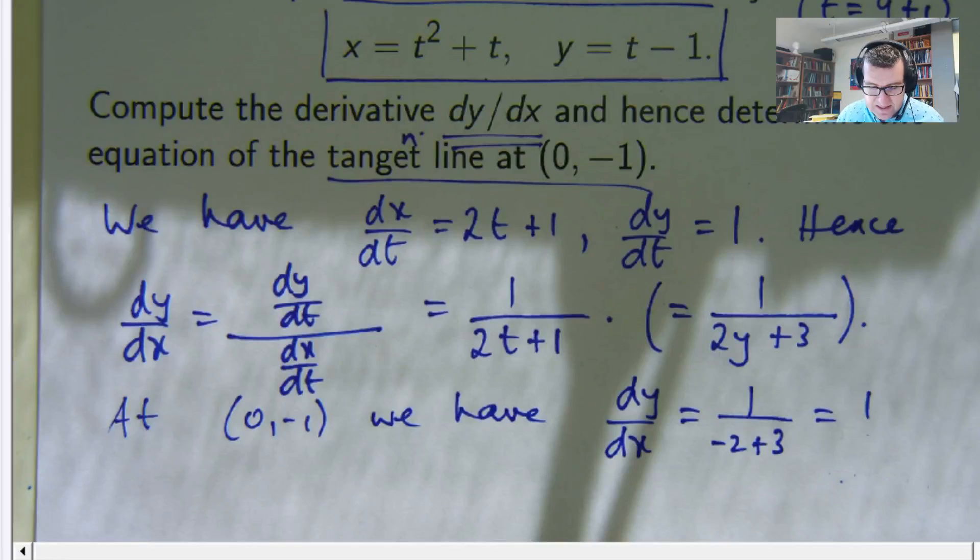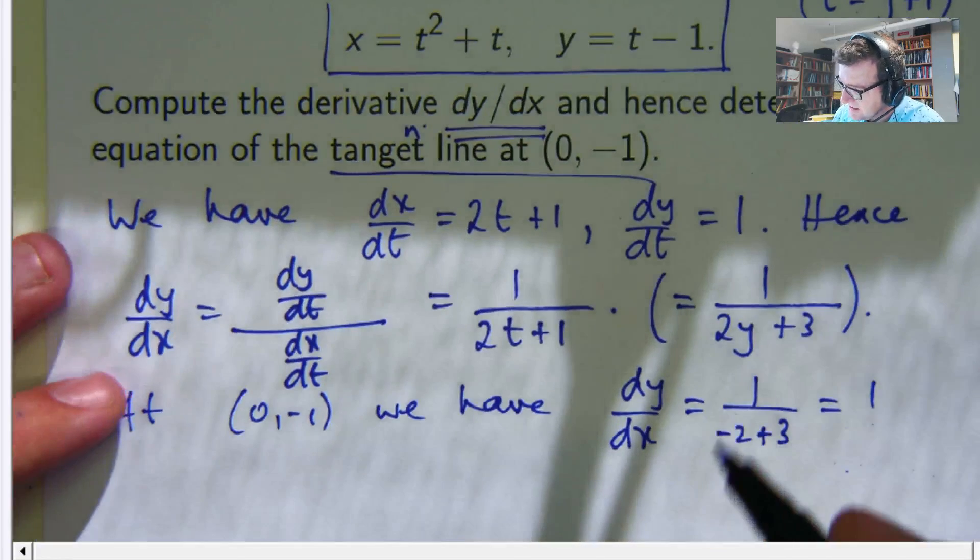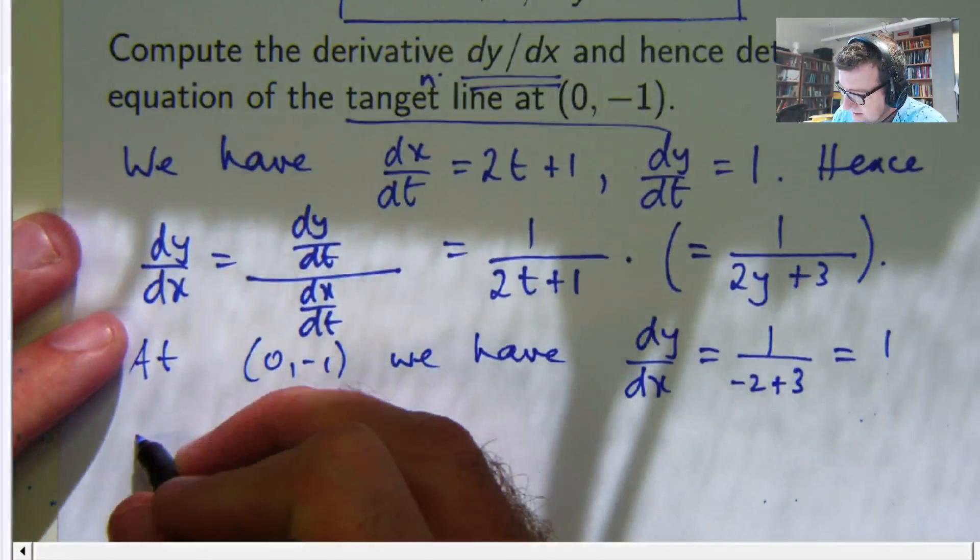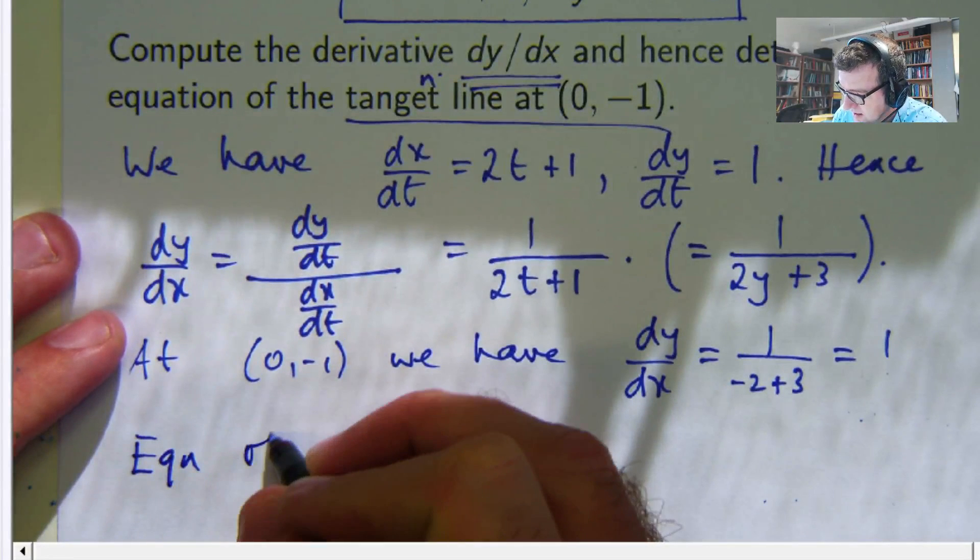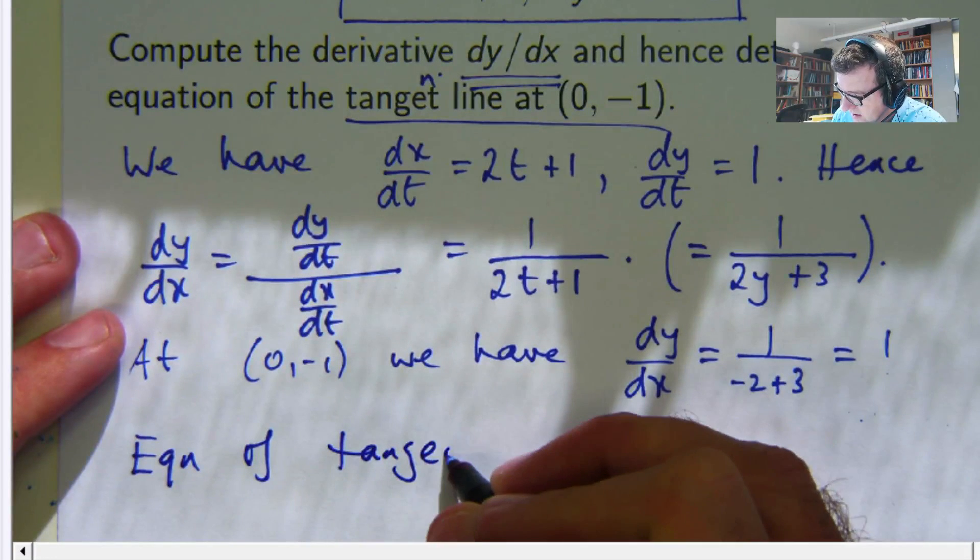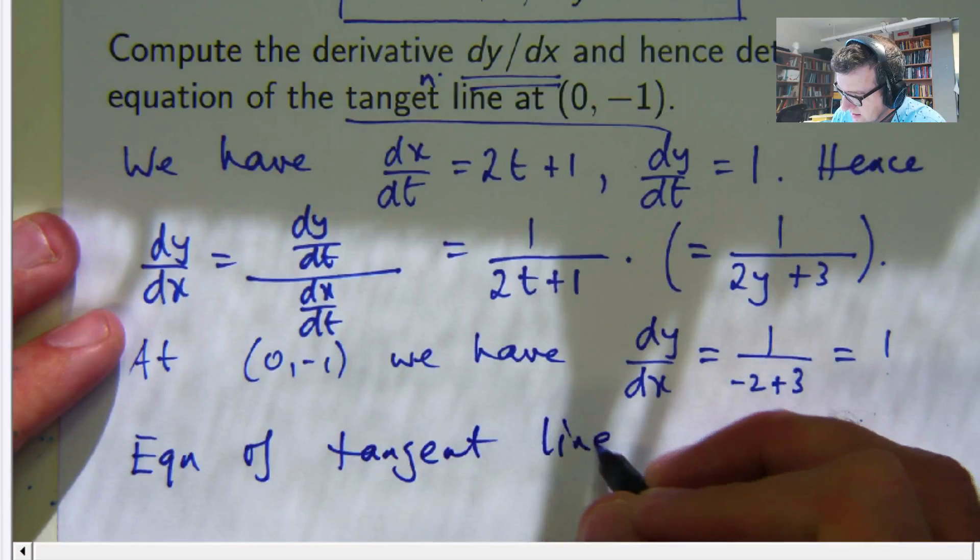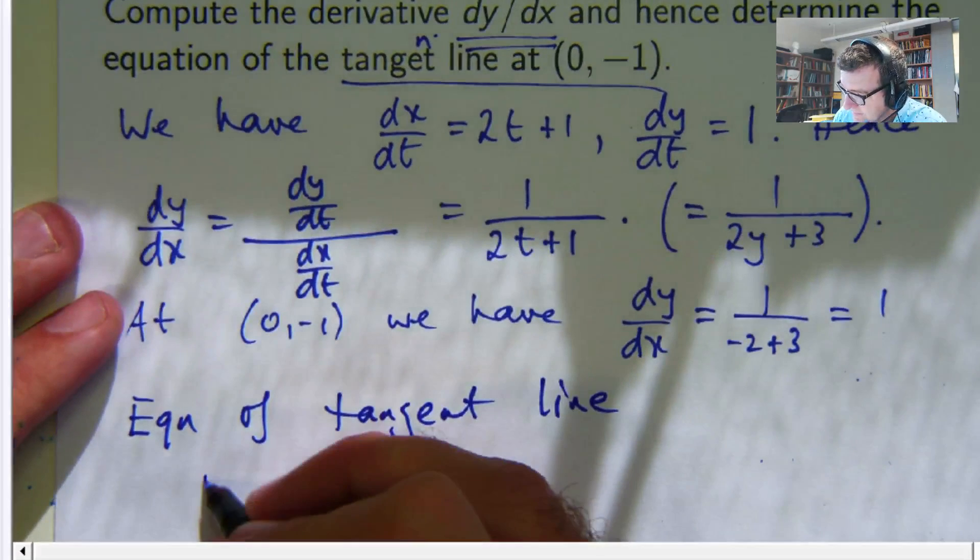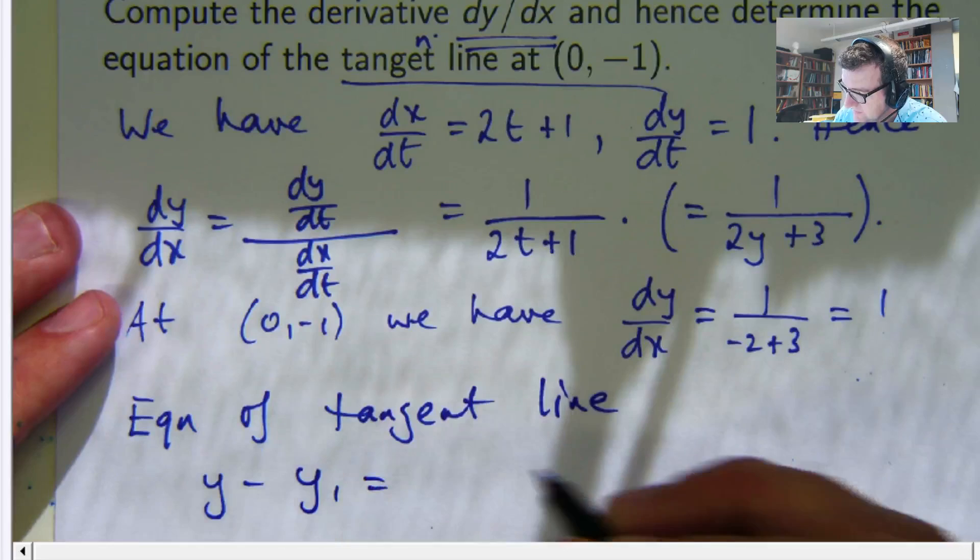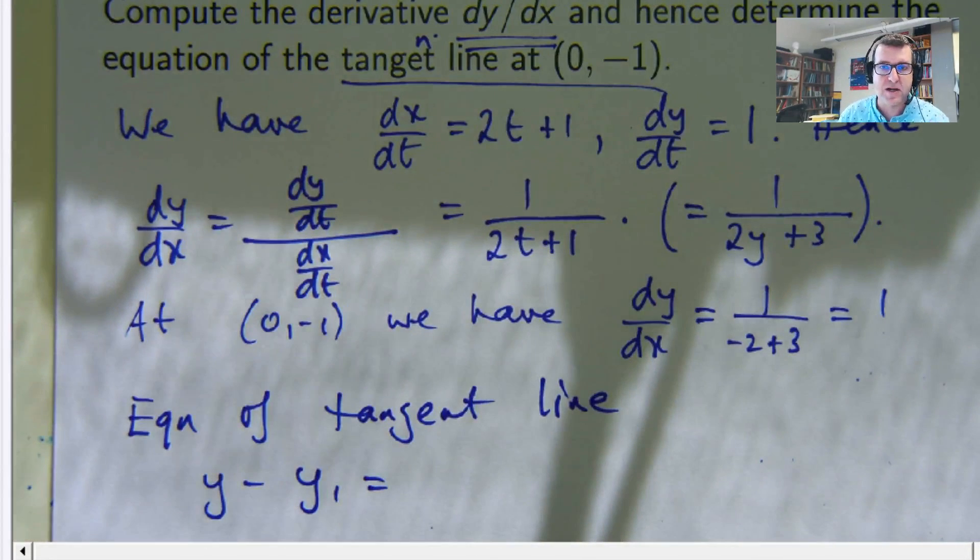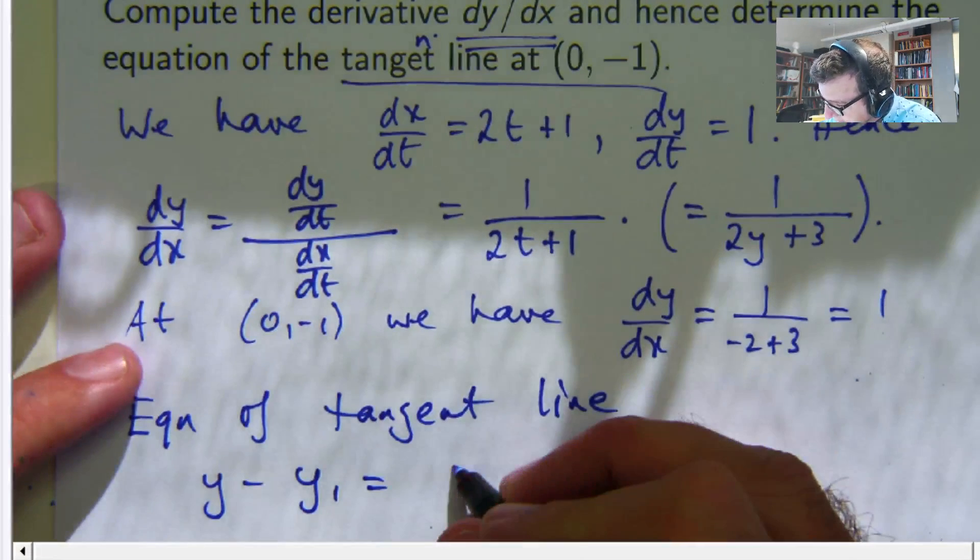Alright. So let's do the equation of a tangent line. It's one of those y minus y1 equals m bracket x minus x1.